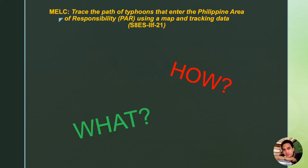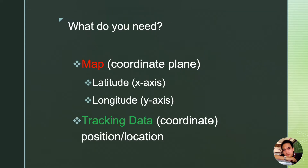How do we track tropical cyclones? What are the things we need in order to track them? Let us start with the things that we need. We need a map, which will serve as our coordinate plane. It is where we are going to plot the positions of the tropical cyclone at a specific day or time. Note that our map must have both the longitudes and latitudes. And of course, we need the tracking data. These data are usually provided to us by the weather satellites positioned in outer space.